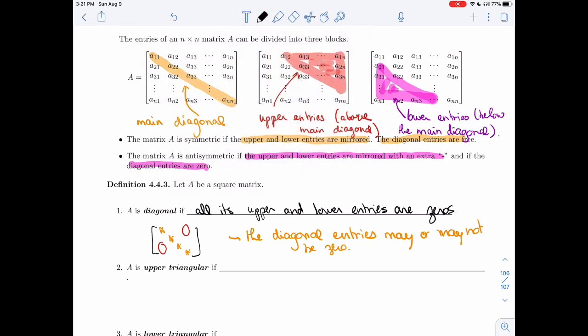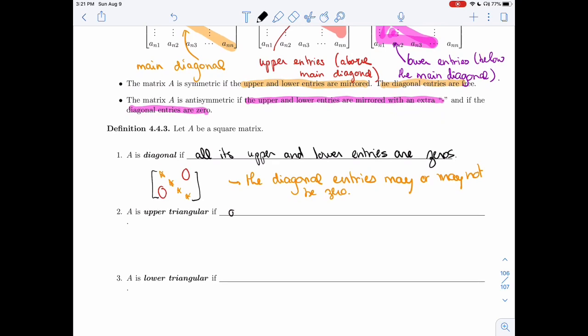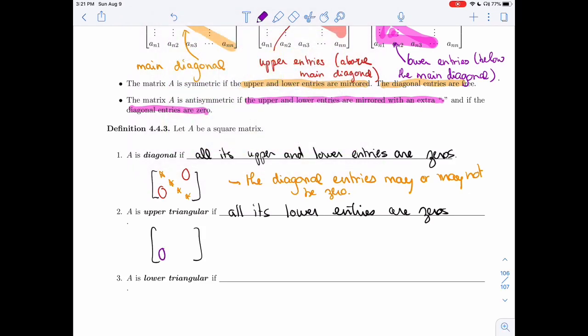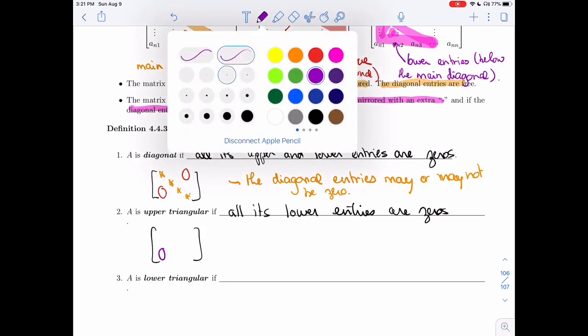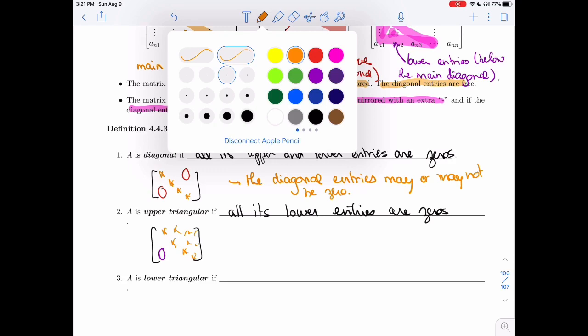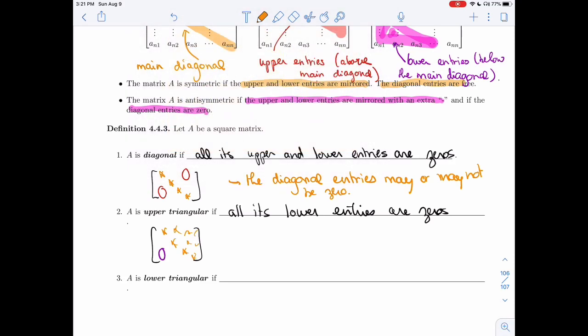All right, A is upper triangular if all its lower entries are 0s. So again, if you look at the shape of the matrix, what's underneath here, that will be 0. The diagonal could be anything. And everything above can be anything, including 0. And so the only restriction is what's under the diagonal.